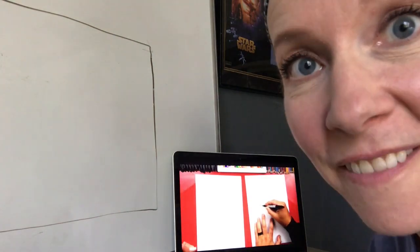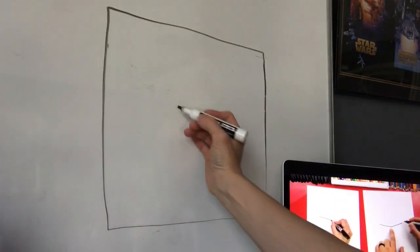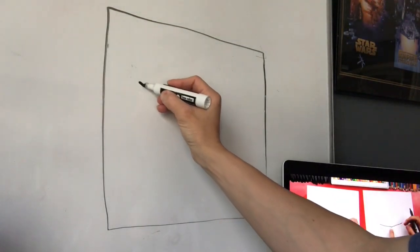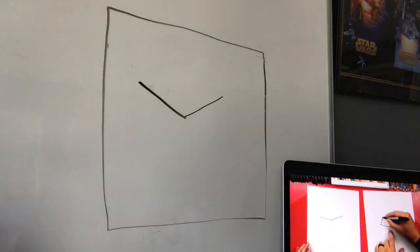We first start with a V shape. So we're going in the middle of our paper. I'm just gonna turn it so now you can just see what I'm drawing. And go down and back up. Just a V shape.